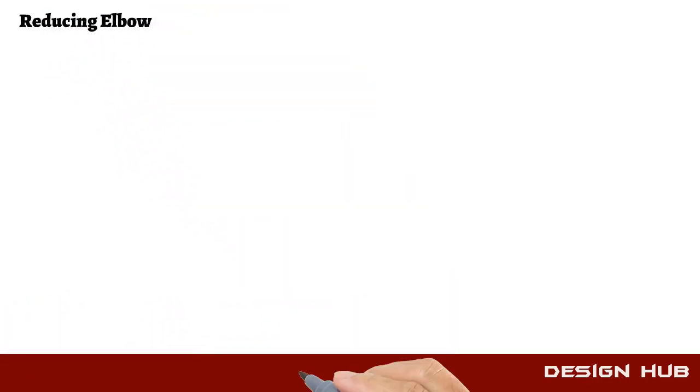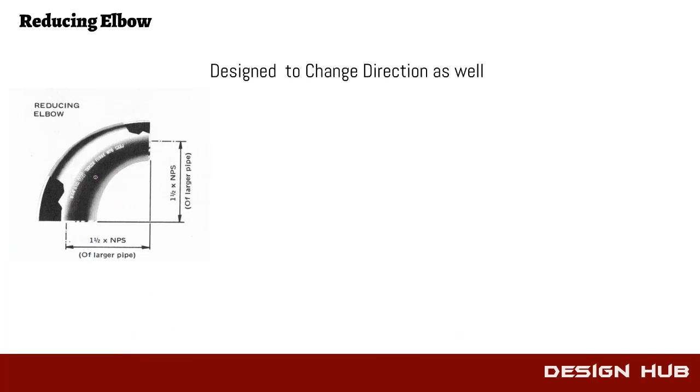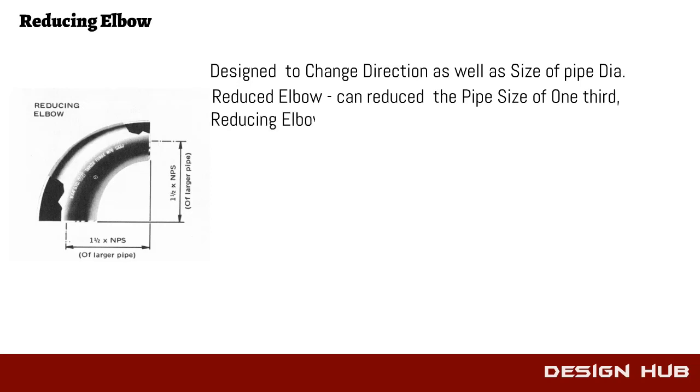With the help of reducing elbow, we can change direction and also change diameter on the other side. This type of elbow provides gradual reduction of elbow size, so pressure drop changes accordingly.